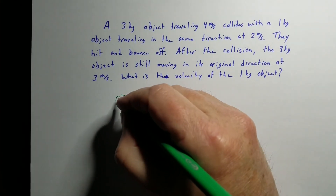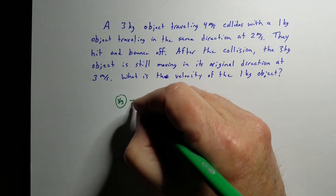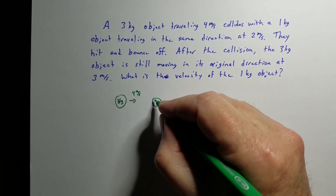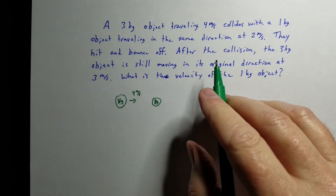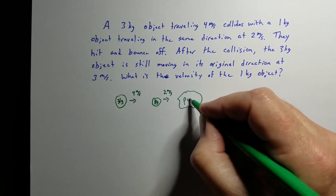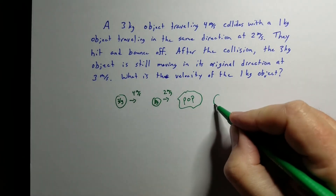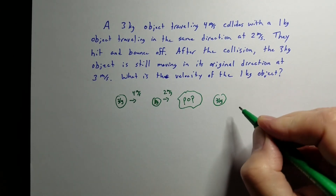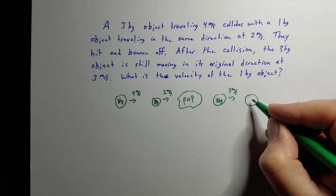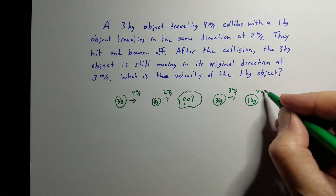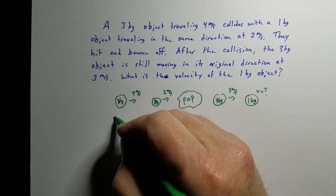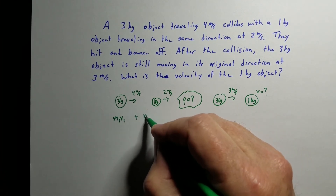For Example 2, we have a 3 kg object traveling at 4 m/s — no direction was given, so I'll choose to the right. It collides with a 1 kg object traveling in the same direction at 2 m/s, so they're both going to the right. They crash into each other, and after the collision the 3 kg object is still moving in its original direction but now at 3 m/s — it lost some speed. We want to find what happens to the 1 kg object.